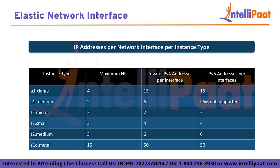For t2.medium, I can attach a maximum of three network interfaces and six private IPv4 addresses per interface, with IPv6 also at six per interface. For z1d.metal, I can attach 15 network interfaces simultaneously, with 50 private IPv4 addresses per interface and 60 IPv6 addresses per interface. This means for z1d.metal I can have 15 network interfaces each containing 50 IPv4 addresses, giving 15 into 50 IPv4 addresses available.